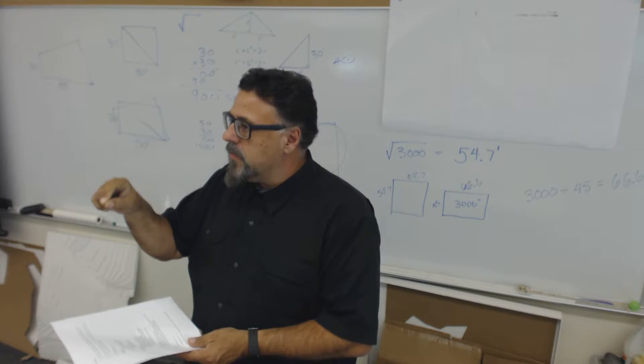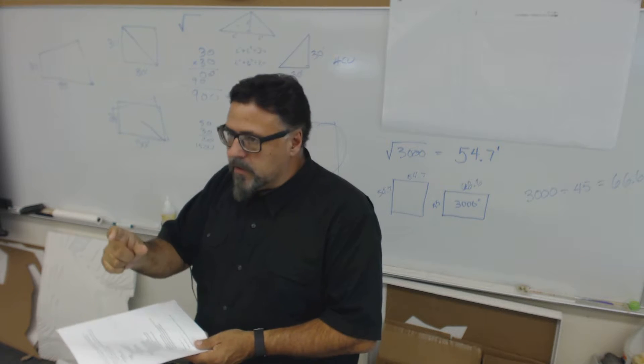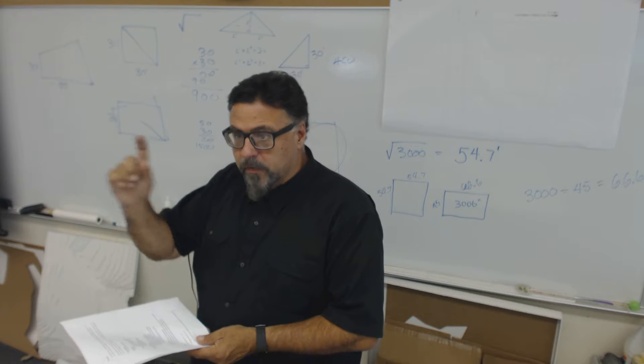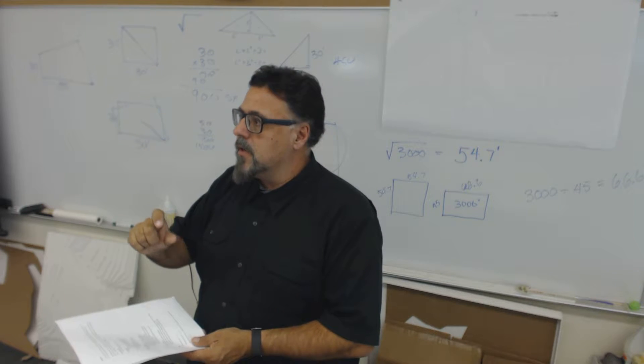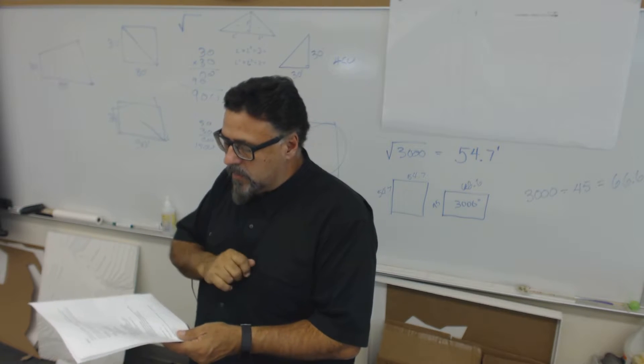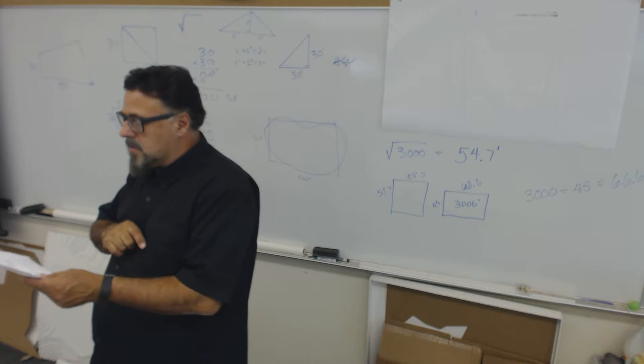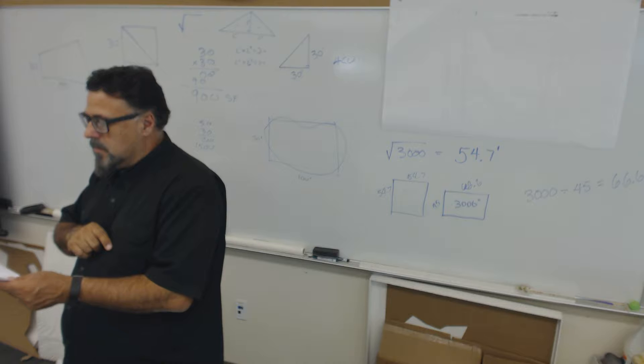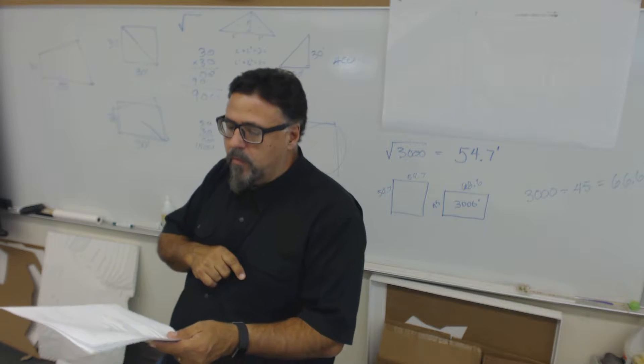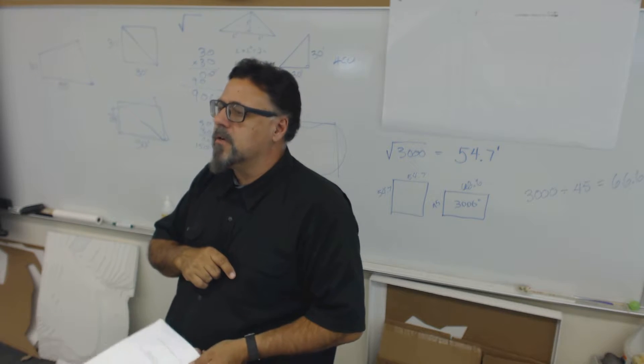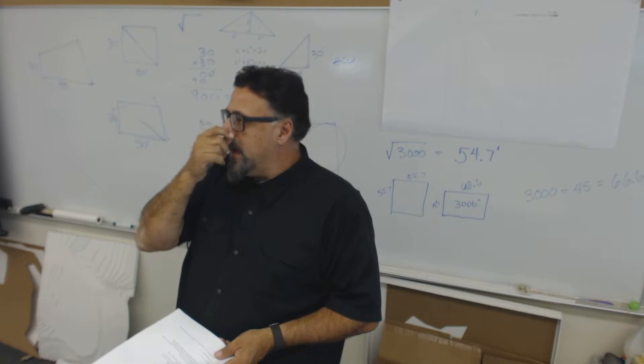So 3,000 square feet, then you're going to cut another square out. So the first one's a square, 3,000 square feet. The second one is a square, 500 square feet. The next one is a square, 1,000 square feet. And then finally, you're going to have one more square that is 1,500 square feet.